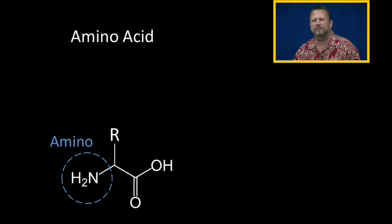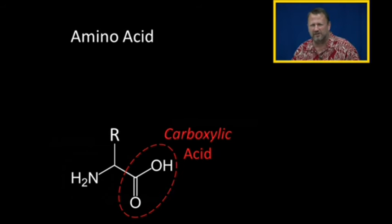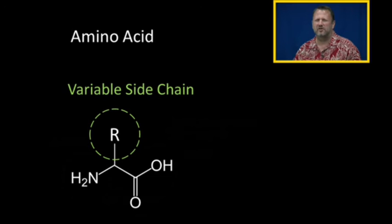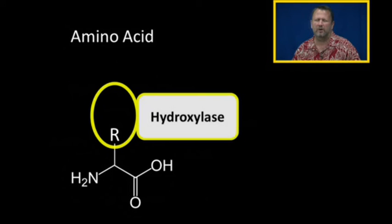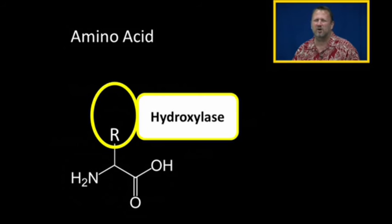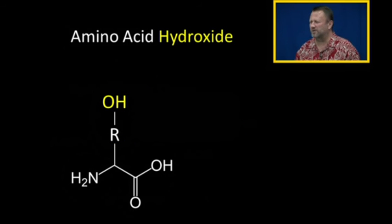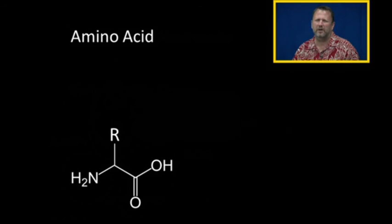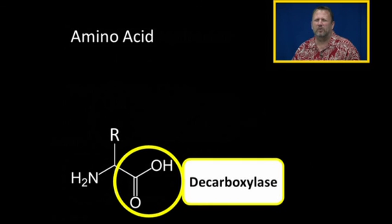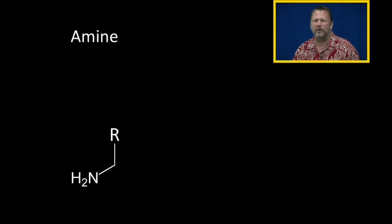Here's the generic structure of any amino acid: there's our amino group, there's our carboxylic acid group, and there's the variable or side chain group. One of the steps will be a hydroxylase enzyme that puts a hydroxide group — that OH group — on the end of the variable group. Then we remove the carboxylic acid using decarboxylase. The decarboxylase removes the carboxylic acid group, and instead of having an amino acid, now we just have an amine.